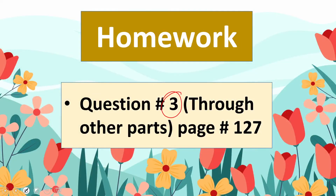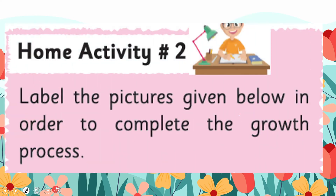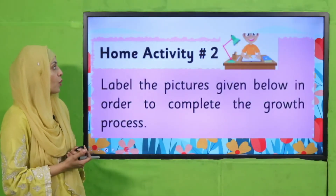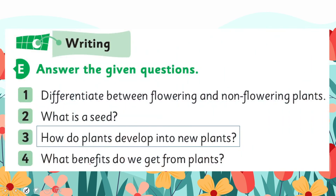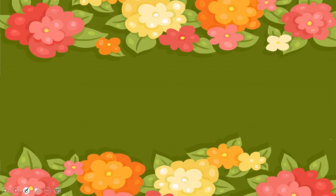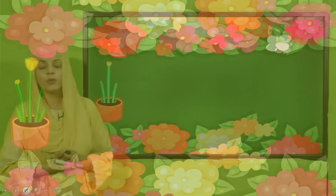For homework, you will do Question Number 3, which addresses the second mode — through other parts of the plant — on page number 127. You will complete it in your notebooks. You will also do Activity Number 2: label the pictures given below to complete the growth process. Today you will do 'by other parts' — the second mode.